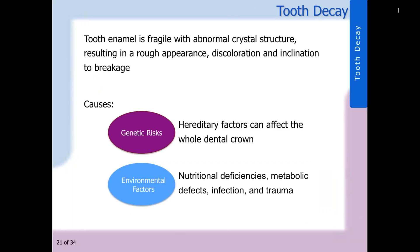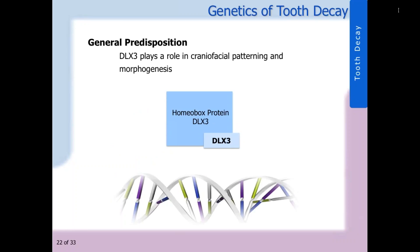Tooth decay occurs when the tooth enamel is fragile with abnormal crystal structure, resulting in a rough appearance, discoloration, and inclination to break. This is due to many environmental factors, such as nutritional deficiencies, metabolic defects, infection, and trauma, or genetic causes. A patient can have a general predisposition towards tooth decay, which involves a DLX3 gene. DLX3 is a gene coding for homeobox protein DLX3, which plays an important role in craniofacial patterning and morphogenesis.